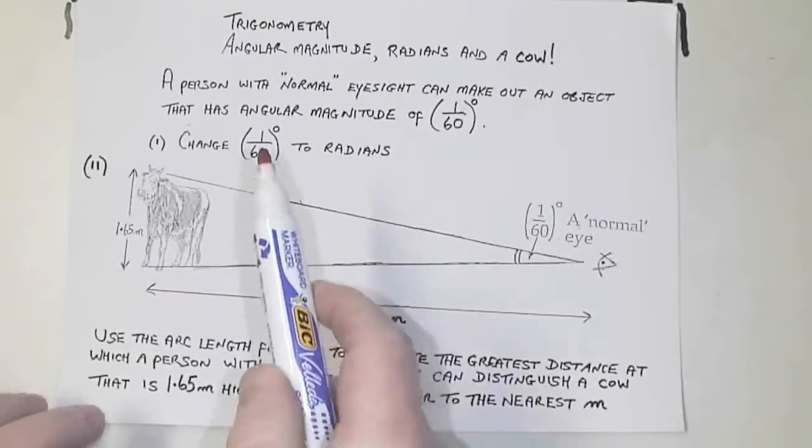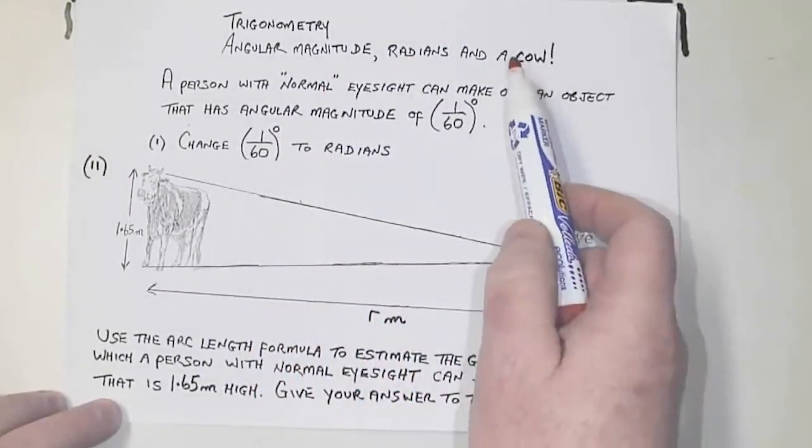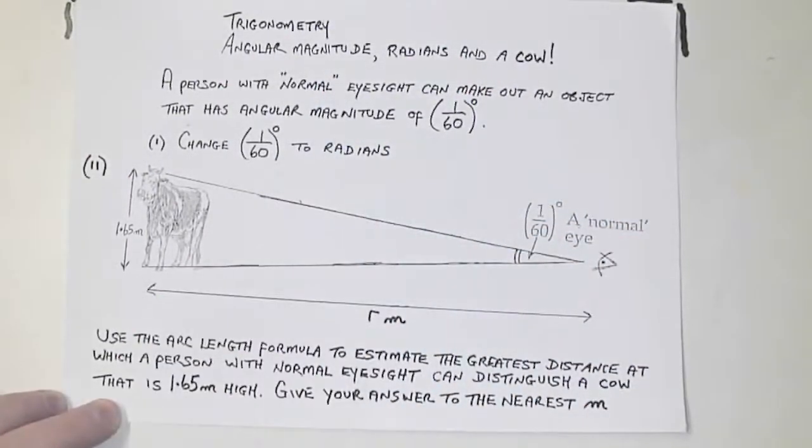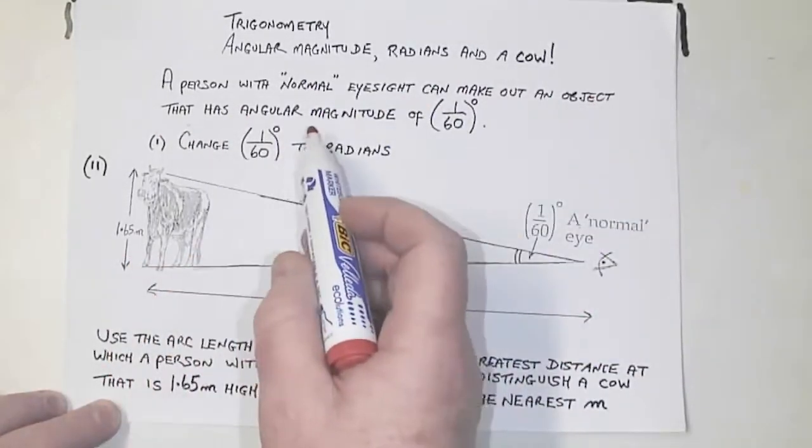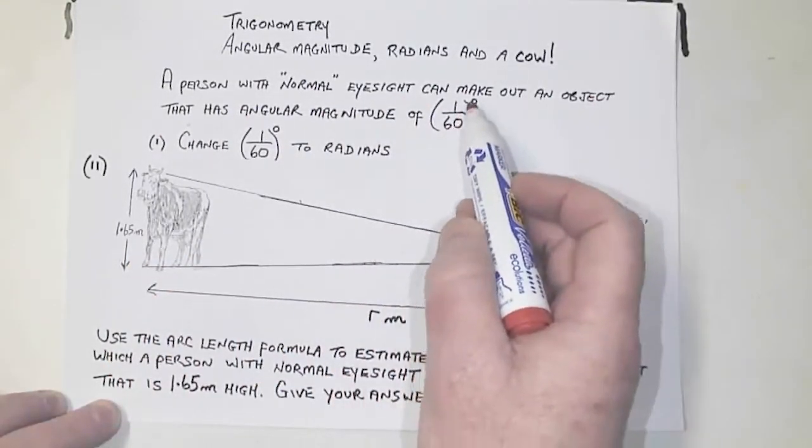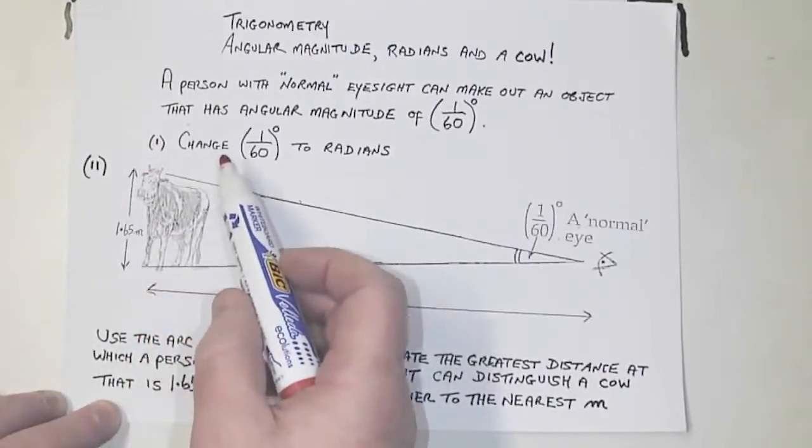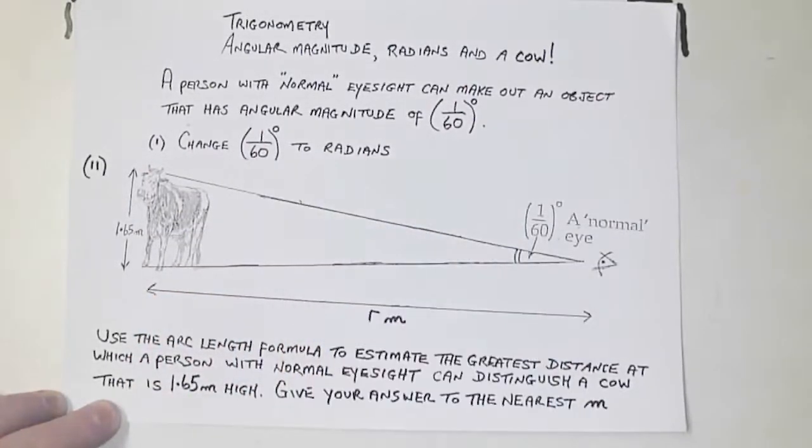In this clip, we're going to look at angular magnitude, radians, and a cow. It's a section on trigonometry. A person with normal eyesight can make out an object that has angular magnitude of 1/60th of a degree. Part 1, change 1 over 60 in degrees to radians.